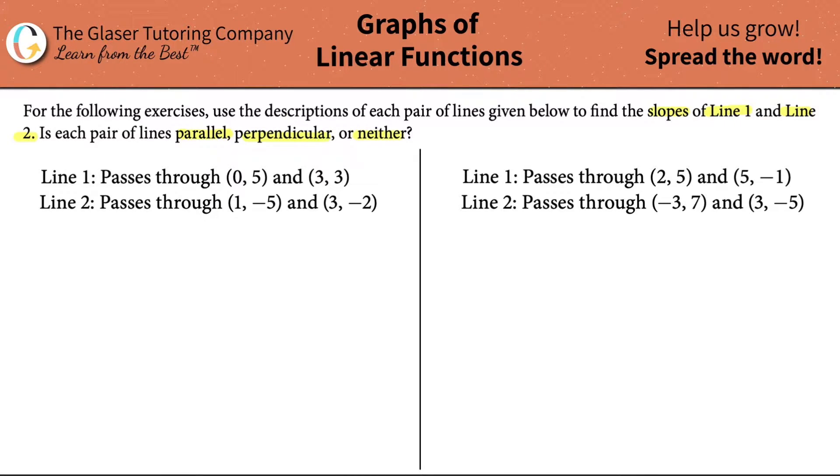First thing is, here's line 1, and they give us two points on a line. Any time you know two points on a line, you can easily calculate the slope by remembering the slope formula. The slope of any linear line is simply the change in y divided by the change in x, meaning the change in the y-coordinates of the points divided by the change in the x-coordinates of the points. In other words, you can rewrite it as y2 minus y1 over x2 minus x1.